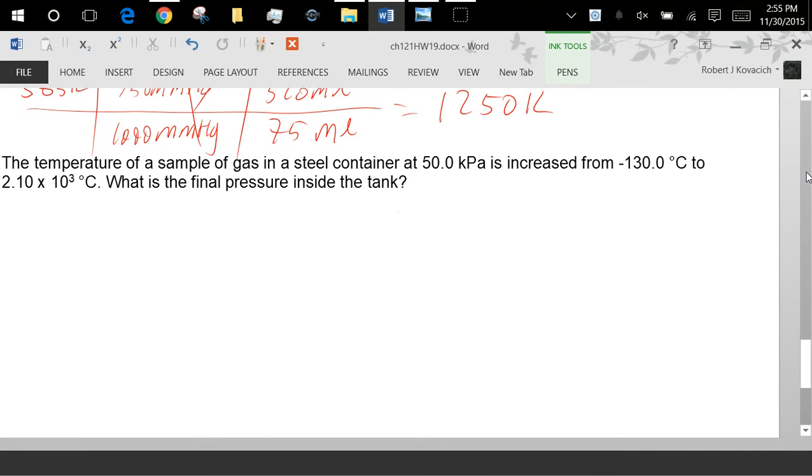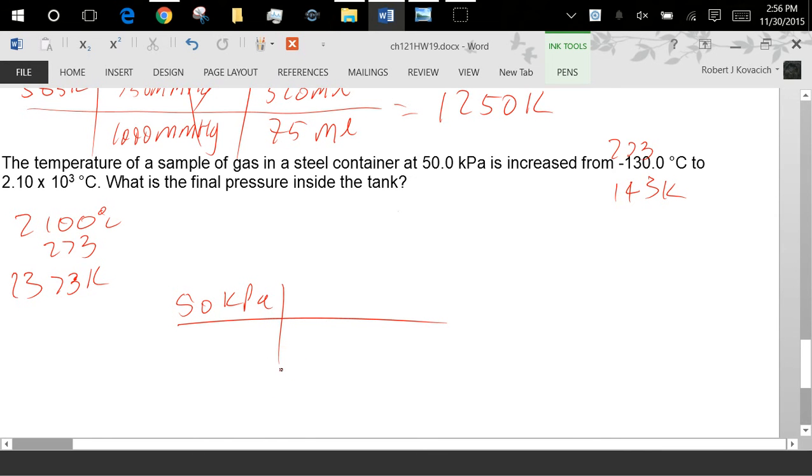Temperature of a sample of gas in a steel container is 50 kilopascals is increased to 130 degrees Celsius from negative 138 degrees Celsius. What's the final pressure inside the tank? Okay, so 273, 341, and this is 2100 Celsius, 273, 283. Final pressure, so 50 kilopascals. And the temp went up dramatically, so I'll put my big number up top and my little number on the bottom. And then I'll get a kilopascals value. 50 times 2373 divided by 143, and we get 830 kilopascals.